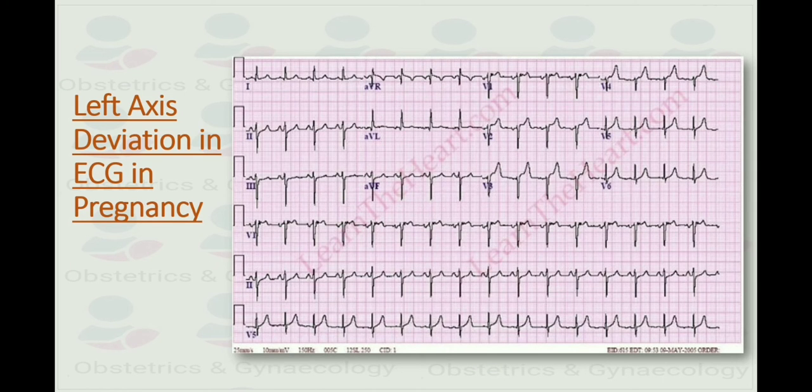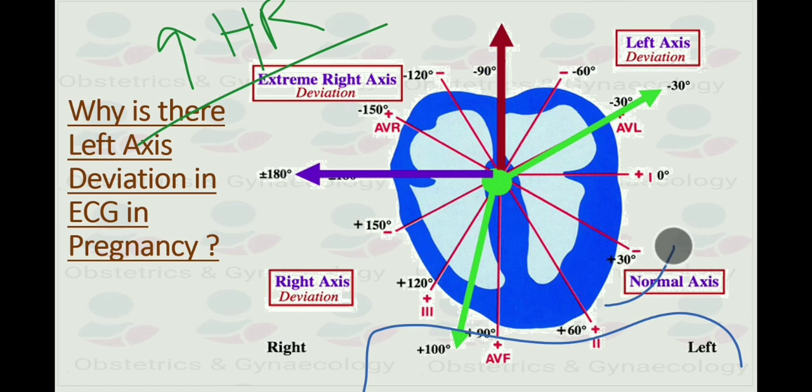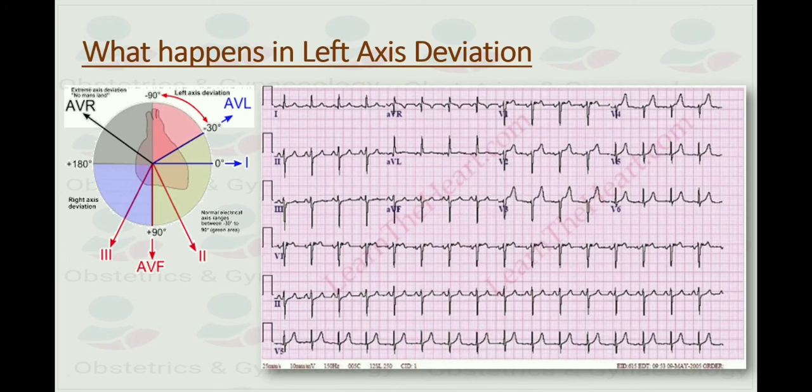Here you can see left axis deviation in ECG in pregnancy. In lead 1, positive deflection. In AVL, we have negative deflection. The question arises, why is there left axis deviation in ECG in pregnancy? Research shows that with increased heart rate of pregnancy, the PR and QT intervals shorten. There may also be slight leftward or rightward axis deviation due to rotation of the heart from elevation of the diaphragm or the gravid uterus. Basically, left axis deviation is a condition where the mean electrical axis of ventricular contraction lies in the frontal plane direction between minus 30 and minus 90. This is reflected by QRS complex positive in lead 1 and negative in leads AVF and lead 2, as you can see from this ECG.